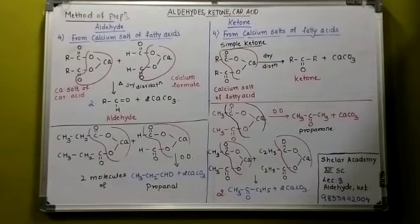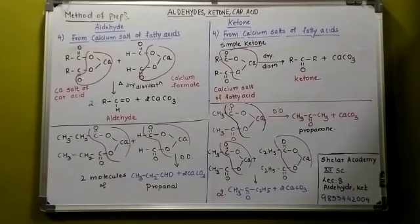Now, suppose if I want to prepare a simple ketone, I can take calcium acetate which undergoes dry distillation to form propanone. So it is all about this method of preparation. Try to prepare the different aldehydes as well as the ketones by this method.